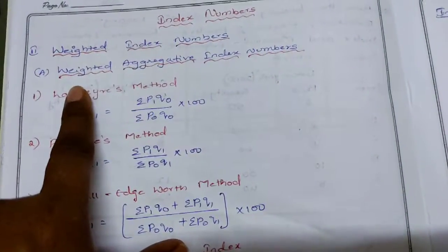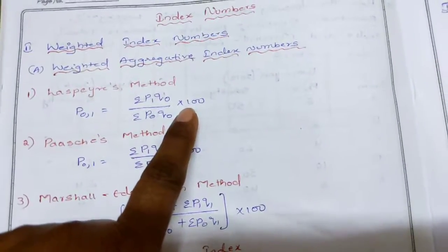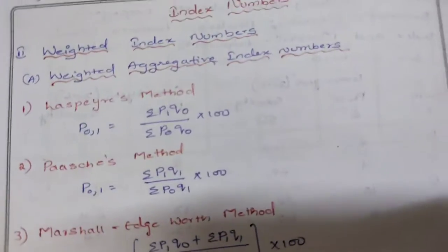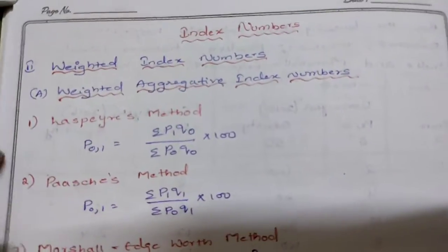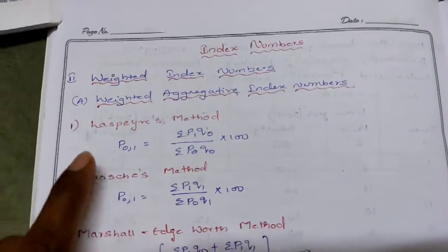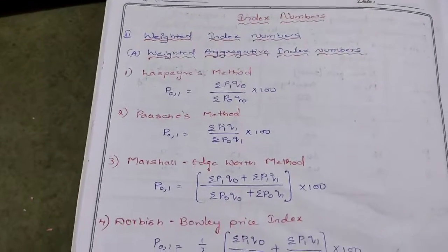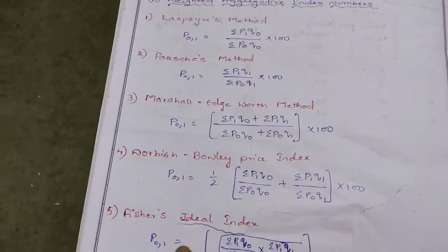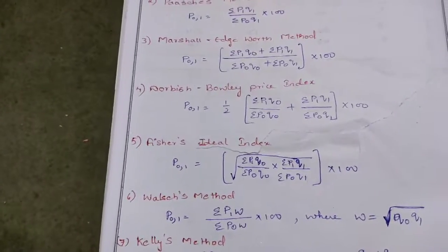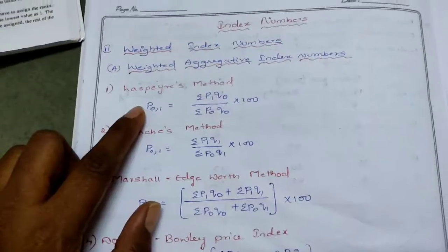Under weighted index numbers, the first method is weighted aggregative index numbers. Under weighted aggregative index numbers we have: Laspeyre's method, Paasche's method, Marshall-Edgeworth method, Dorbish-Bowley method, Fisher's Ideal Index, Walsh method, and Kelly's method. These are the 7 methods we have under weighted aggregative index numbers.